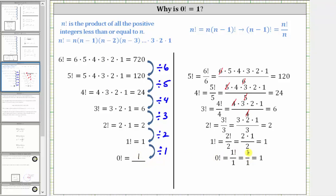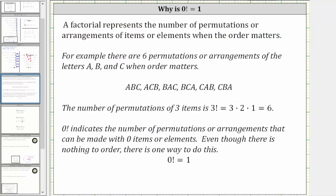Let's take a look at a second justification as to why zero factorial is equal to one. A factorial represents the number of permutations or arrangements of items or elements when the order matters. For example, there are six permutations or arrangements of the letters A, B, and C when order matters. The permutations or arrangements are ABC, ACB, BAC, BCA, CAB, and CBA. The number of permutations of three items is three factorial, which is equal to six.